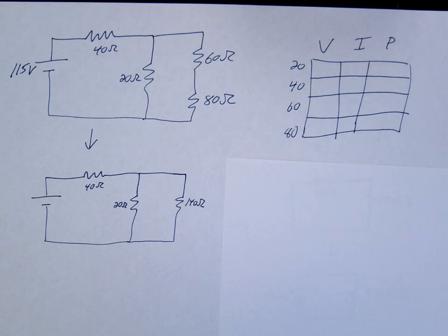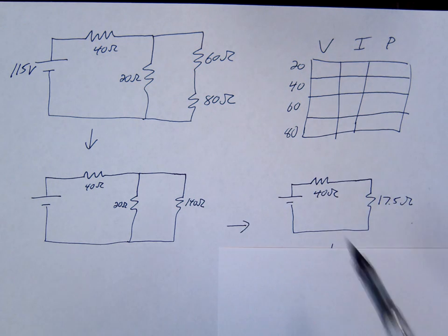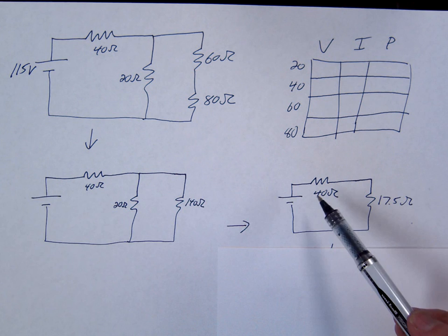That should give you a circuit that looks something like this: 40, 20, and 140. The next thing you should notice is the 20 and 140 are in parallel. So you're going to do the 1 over R plus 1 over R equals 1 over R. The resistance should be smaller than the 20 and 140, and in fact it is. You get 17.5 for that combo. We're leaving the 40 alone.